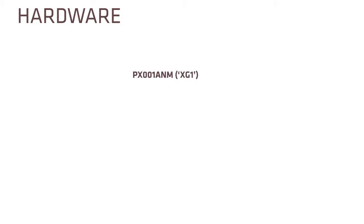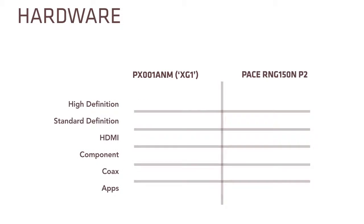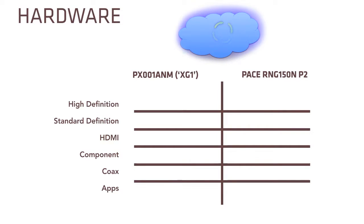The X1 platform is compatible with certain cable set-top boxes, specifically the XG1 DVR and the RNG150N P2 Digital Set Top Box. Both boxes use an internal modem to connect to a cloud-based service that displays the X1 guide. All of the navigation, command and control is based in the cloud. We frequently update the guide, so the customer will see improvements without having to do a thing — pretty neat, right?